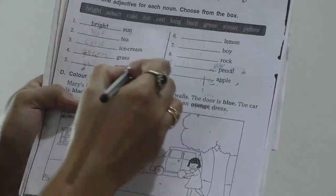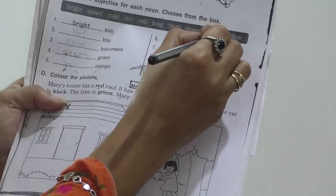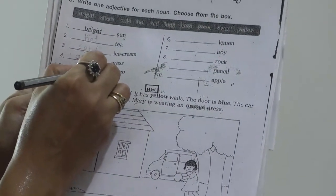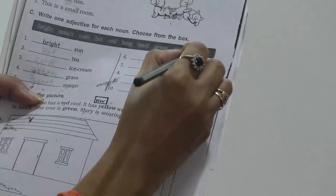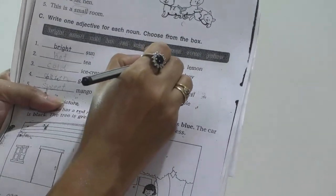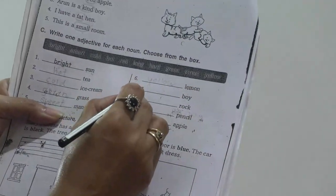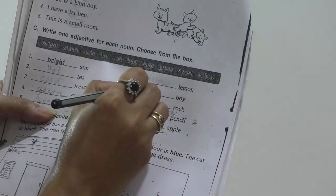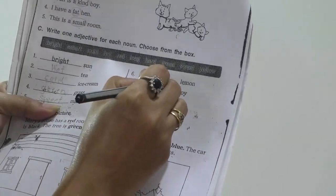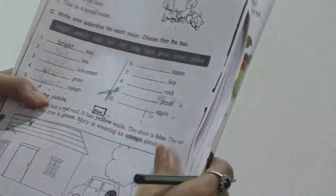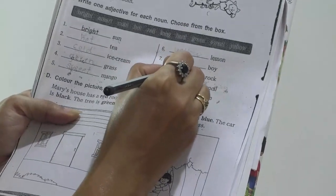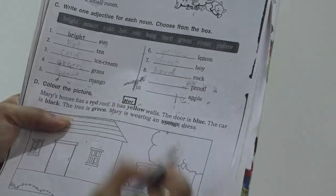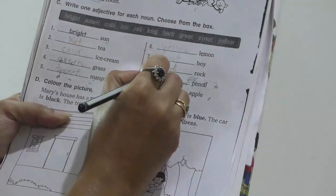Then, number five, mango. Here we are using a sweet adjective because of the taste of mango. Sweet mango. Number 6, dash lemon. Yellow is the correct adjective here. Yellow lemon. Next is dash boy. Smart boy, S-M-A-R-T. Next is dash rock. Rock means stone we can say. Hard, H-A-R-D, hard rock.